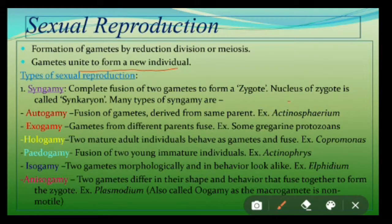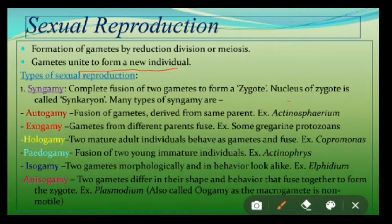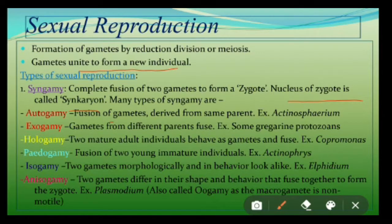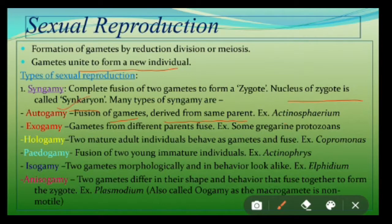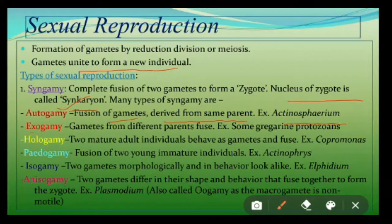Sexual reproduction is of many types. Let us go one by one. Syngamy, also called copulation, is the complete fusion of two gametes of the same species to form a zygote, and the nucleus of the zygote is called the synkaryon. Syngamy is of many types. If the fusing gametes are derived from the same parent, that type of syngamy is called autogamy — example is Actinosphaerium. If the gametes are derived from different parents and fuse, that type of syngamy is called exogamy — some gregarine and coccidian protozoans are the best examples.